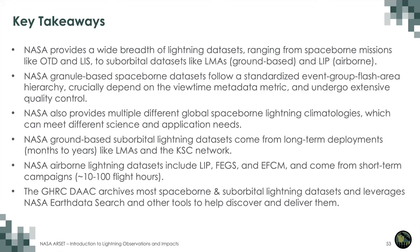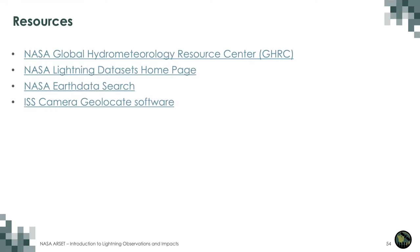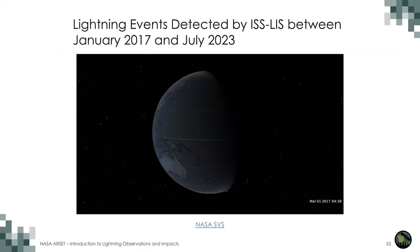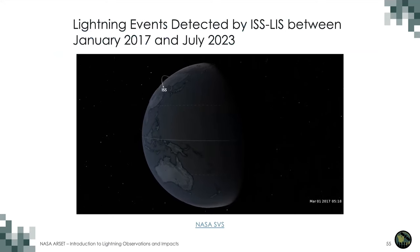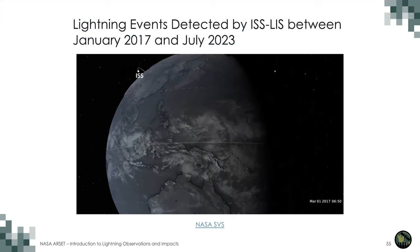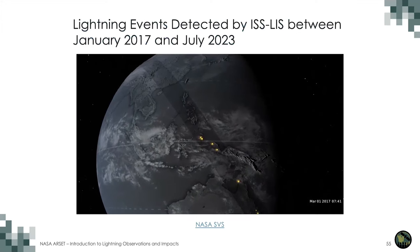Resources include direct links to GHRC, the lightning datasets homepage, Earth Data Search, and the ISS camera geolocate software for background imagery on NASA's GitHub. The presentation wraps up with a video showing lightning detected by ISS-LIS between January 2017 and July 2023 over the full six-year mission period.